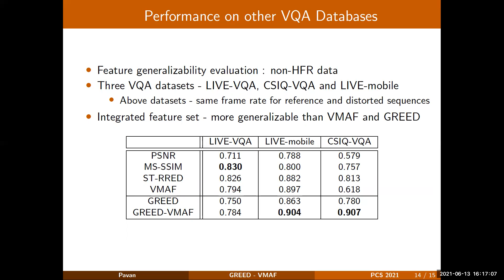The best performance of GREED-VMAF is observed on generic VQA datasets, where three VQA datasets — LIVE VQA, CSIQ-VQA, and LIVE Mobile — are analyzed. From the table, we can observe that GREED-VMAF outperforms both VMAF as well as GREED on LIVE Mobile and CSIQ-VQA datasets, suggesting that the features are somewhat more generalizable than both VMAF and GREED, and include more features that account for temporal distortions.